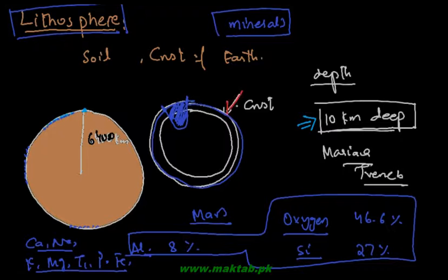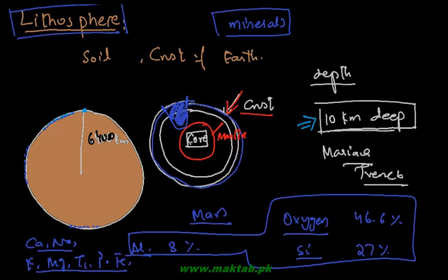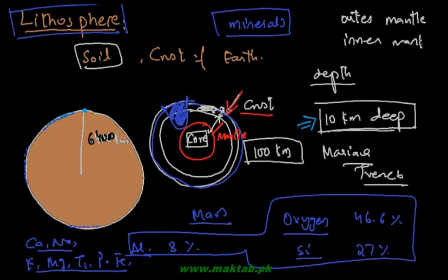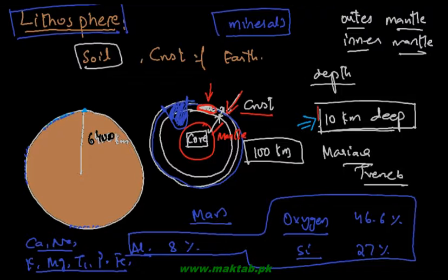The crust is the outermost layer. Between the crust and the center of earth is the mantle, and the innermost part is called the core. The soil and sand we see is basically the outermost layer - the crust of the earth - which is approximately 100 km deep. After the crust comes the mantle, which has an outer mantle and inner mantle, and then an outer core and inner core. This was just to give you an idea of what the lithosphere is and its composition.